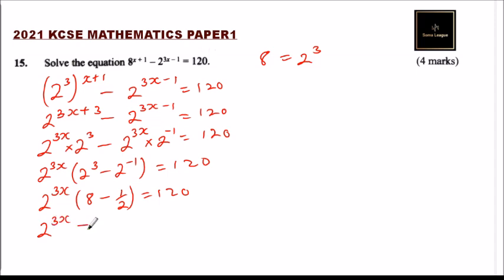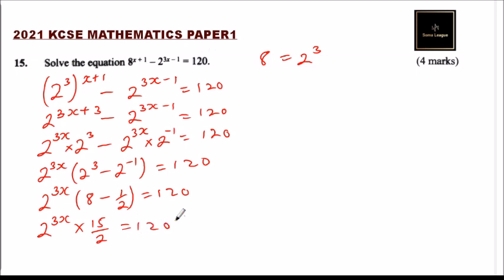8 - 1/2 = 7 and 1/2, which is the same as 15/2. So we have 2^(3x) × 15/2 = 120. We then multiply both sides by 2 and divide by 15.